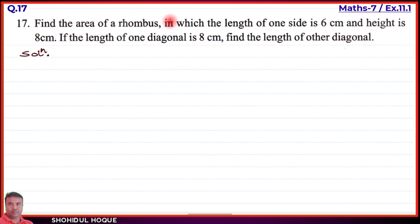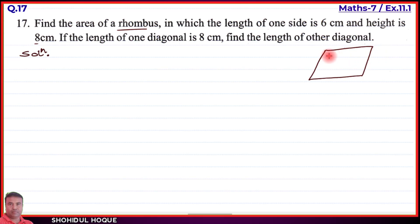The key is to find the area of a rhombus. Let me draw a figure of the rhombus. The given measurements are: the length of one side is 6 centimeters, the height is 8 centimeters. Now let me draw the diagram and label it. The rhombus is named A, B, C, D and each side measures 6 centimeters. The height is 8 centimeters.